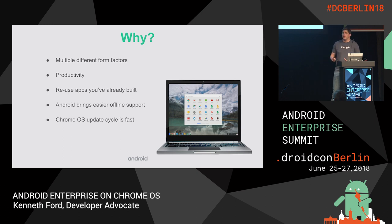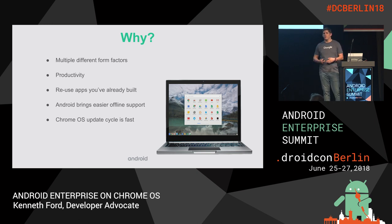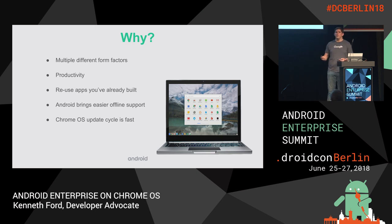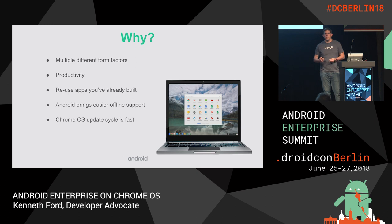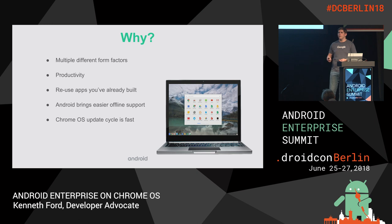The Chrome OS update cycle is extremely fast and occurring often. We push updates to Chrome OS at the same frequency as the Chrome browser — every six weeks. All Chrome OS devices come through us, so you don't have to worry about OEM delays or carrier delays. Every Chrome OS device gets updates every six weeks, and any feature differences between devices are generally down to hardware, not software.